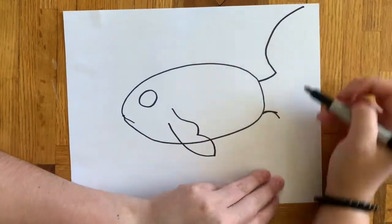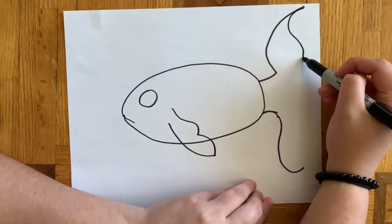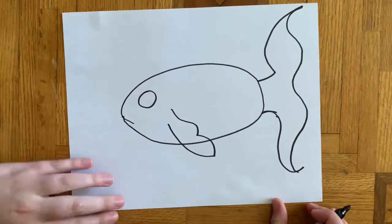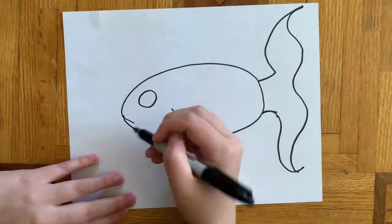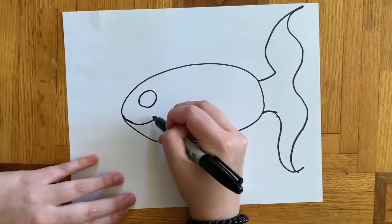Your back fin would be something like this starting with two lines out and then making a sort of mustache type look. Anything you do is going to look good.